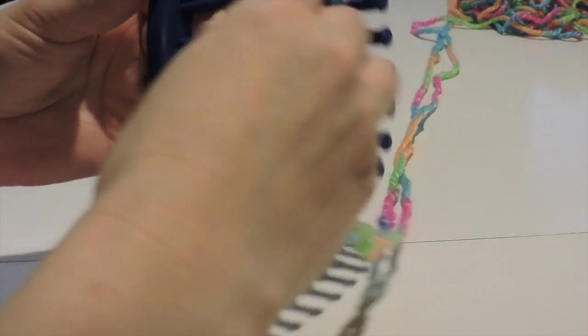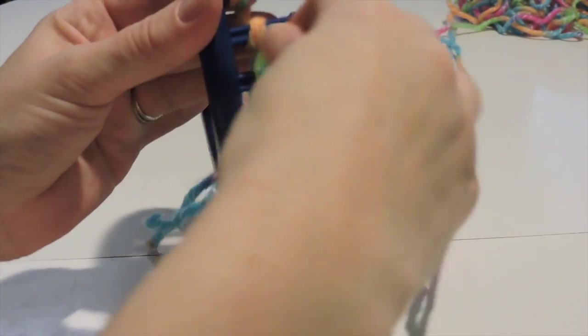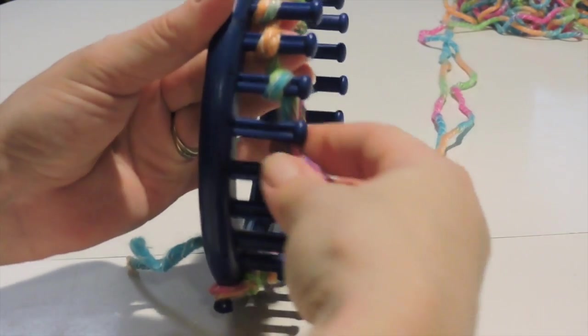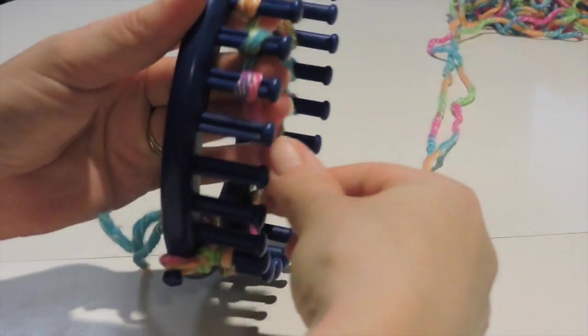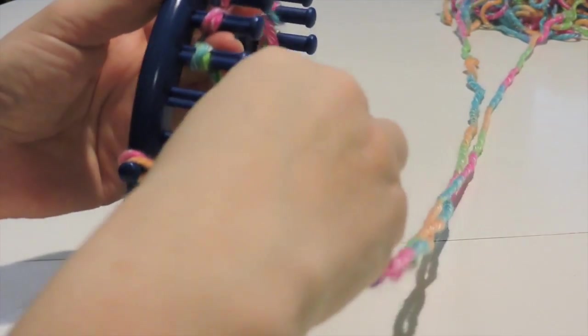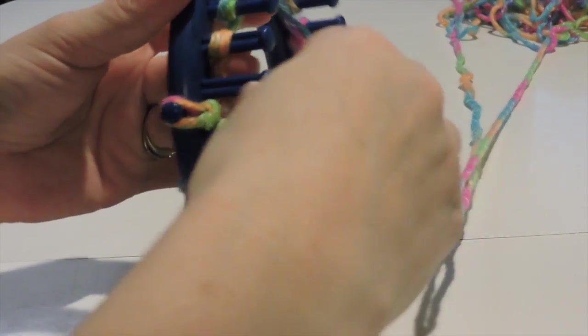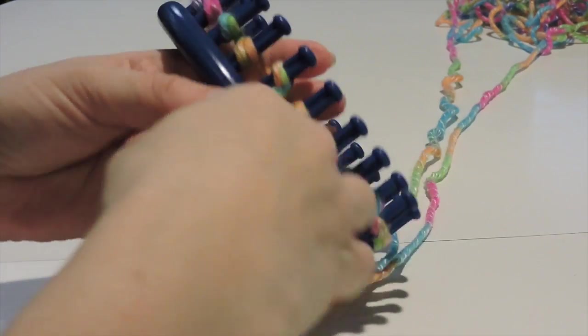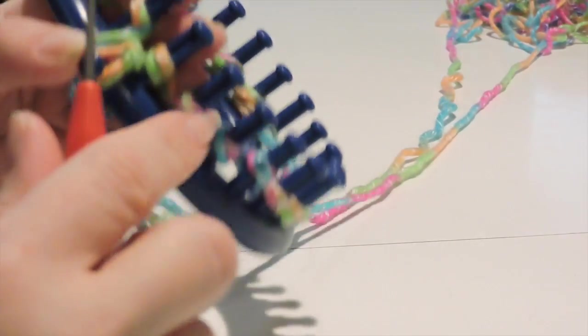This is one of my favorite cast-on methods, and it's very simple. Anyone can do it. Just keep wrapping until you make it back to that anchor peg, and then you'll want to start and go above the loops that you already made.